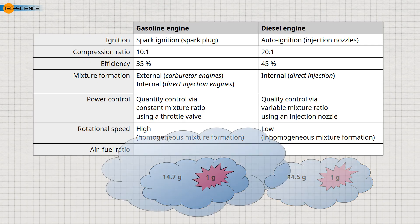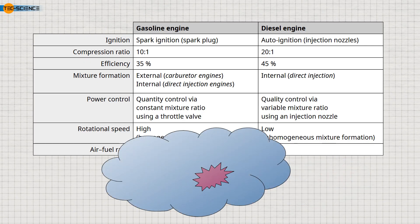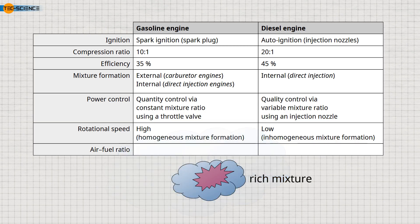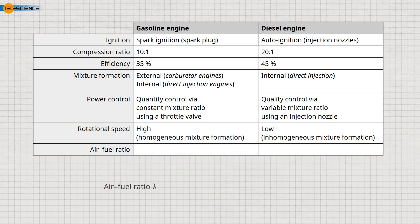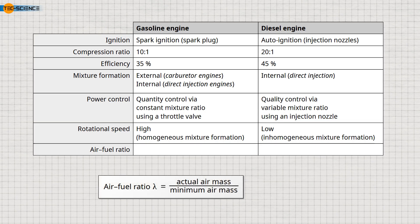An excess of air in the cylinder is called a lean mixture, while an excess of fuel is called a rich mixture. The air-fuel ratio lambda, also known as air number, describes the excess or lack of air during combustion. The lambda value is the ratio of the actual air mass to the stoichiometric minimum air mass.